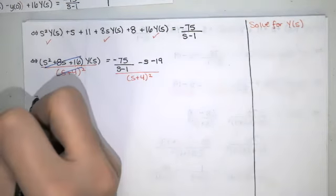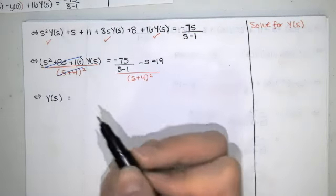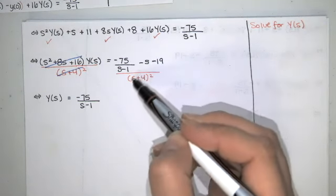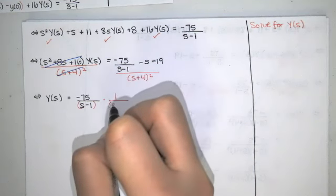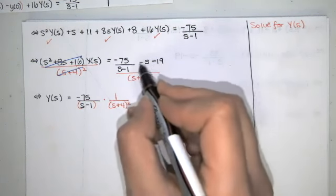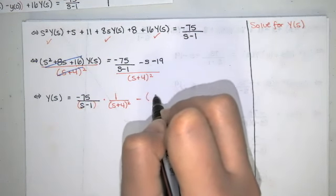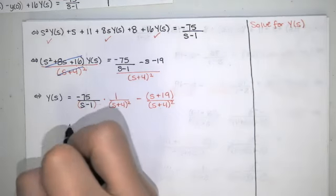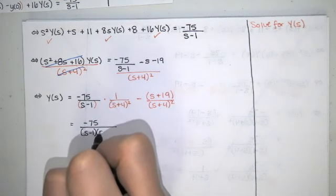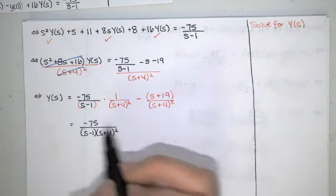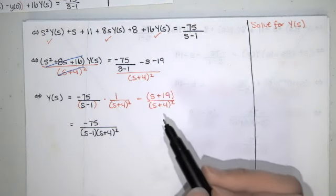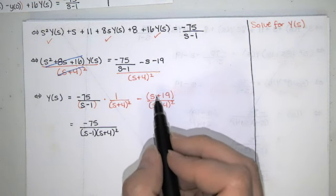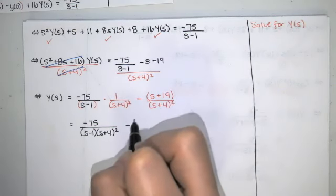After those terms reduce, we end up with a complex fraction on the right-hand side. Rather than dividing by s plus four squared, I'll multiply by one over s plus four squared. I'll also factor out the negative one, so this becomes negative one times the quantity s plus 19, all divided by s plus four squared. For the term with negative 75 over s minus one times s plus four squared, I'll use partial fraction decomposition since there's no matching table entry. For the other part, I can simplify by adding a well-chosen zero — I really wish there were an s plus four in the numerator.